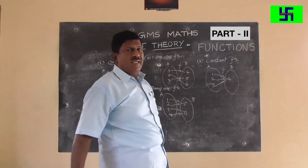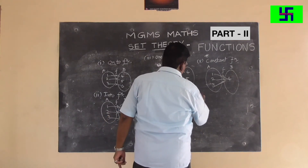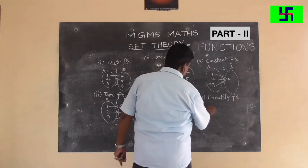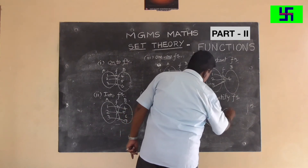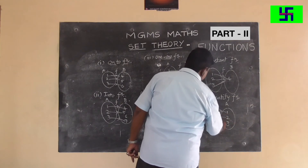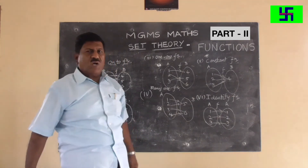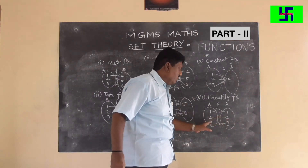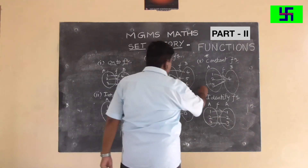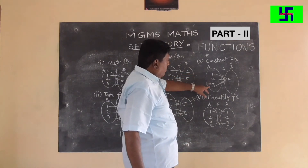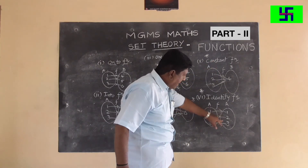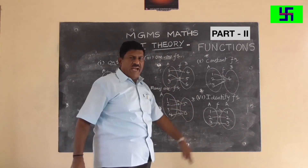The sixth type is the identity function. Here, set A = {1, 2, 3} and the function is from A to A. One is mapped with 1, two is mapped with 2, and three is mapped with 3. When each element is mapped unto itself, it is called an identity function. If all elements map to a single element, it is a constant function; if each maps to itself, it is an identity function.